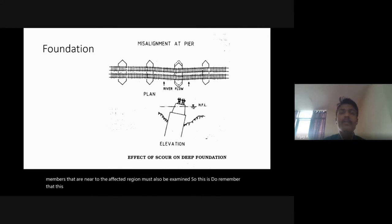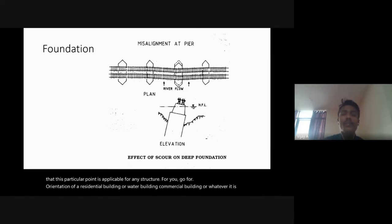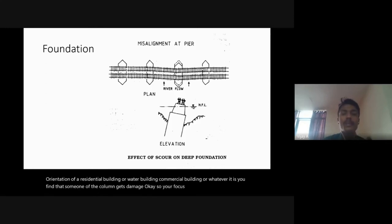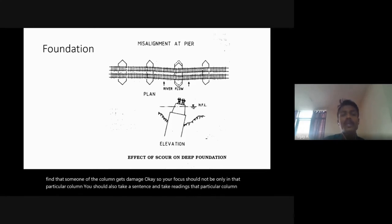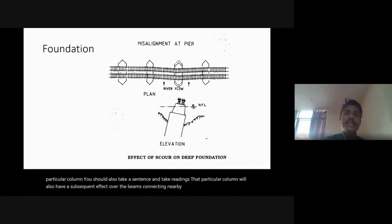This principle applies to any structure. If you go for rehabilitation of a residential or commercial building and one column is damaged, your focus should not only be on that column — you should take readings considering that the column may have a subsequent effect on connecting beams and nearby columns. It is the duty of a structural engineer to take care of nearby columns as well.